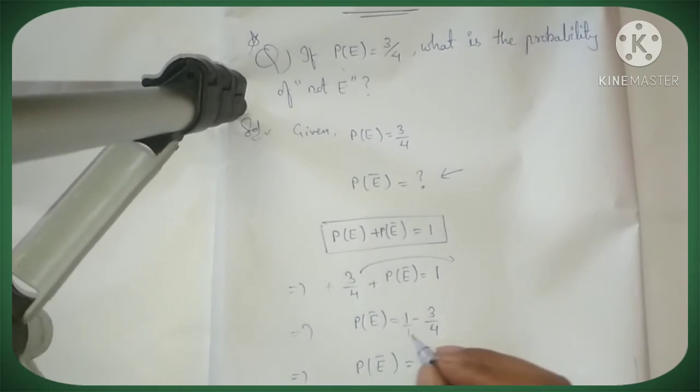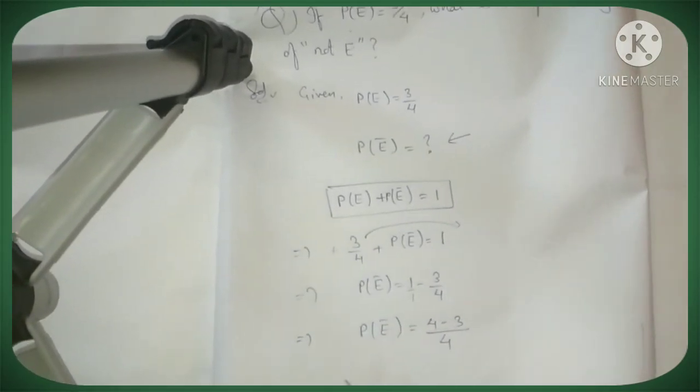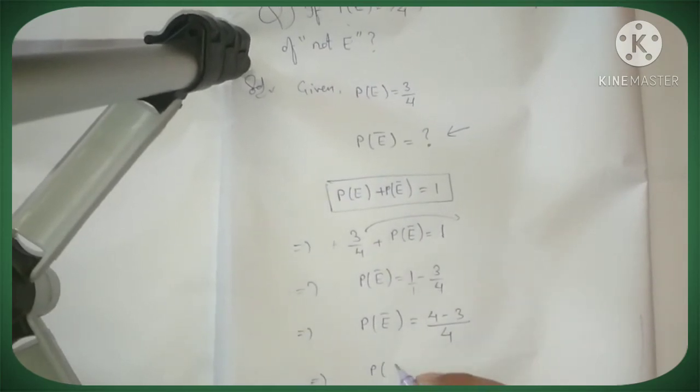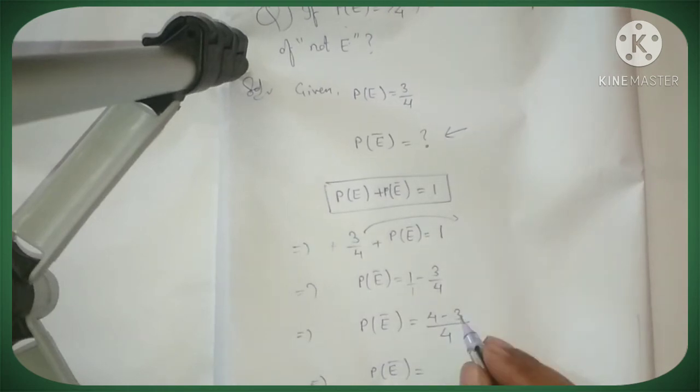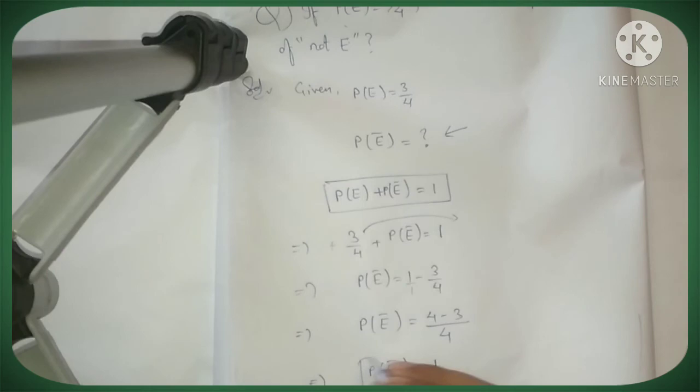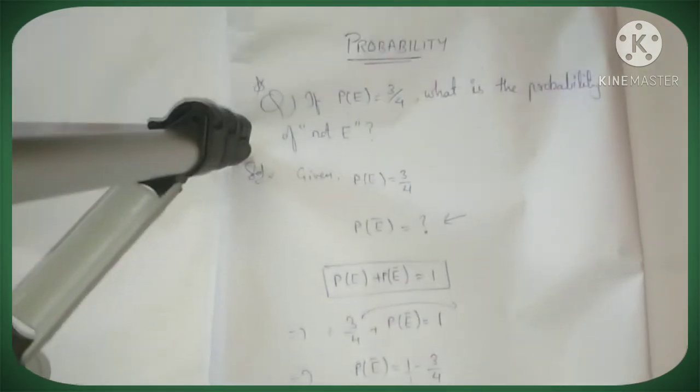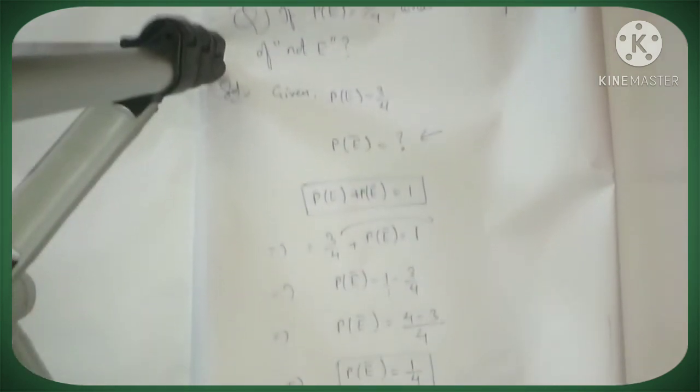By 4. Therefore, probability of not E equals 1 by 4. So we had to find not E, and we got the value as 1/4.